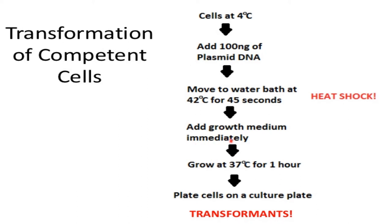Immediately add growth medium and grow at 37 degrees centigrade for one hour. At 42 degrees centigrade, the heat shock treatment causes the plasmid DNA to enter inside the competent cell. After 45 seconds at 42 degrees centigrade, the culture is removed, growth medium is added, and the culture is allowed to grow at 37 degrees for one hour. Then plate the cells on a culture plate.